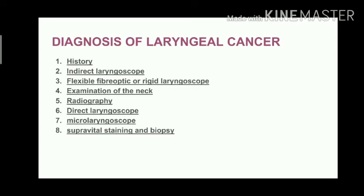The diagnosis of laryngeal cancer begins with getting a detailed history from the patient. Then an indirect laryngoscope is used to visualize the larynx. Flexible fiber optic or rigid laryngoscope may be used — flexible fiber optic laryngoscope is used most commonly in children. Examination of the neck for lymphadenopathy is performed, as it indicates metastasis. Radiographical examinations include CT, MRI, and X-ray. Direct laryngoscopy, micro laryngoscopy, supra-vital staining, and biopsy are also done.